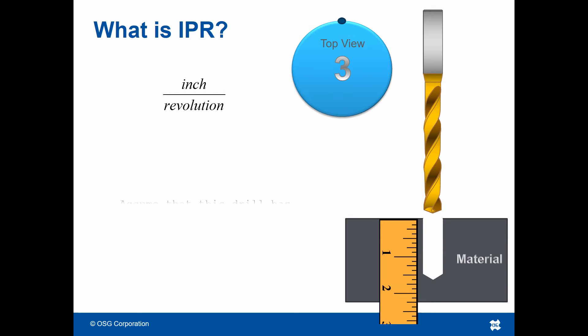Assume this drill has advanced ten thou in three revolutions. We can calculate that the drill's IPR is three thou, three tenths.